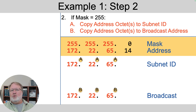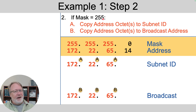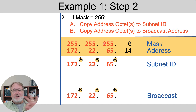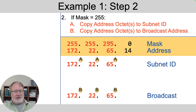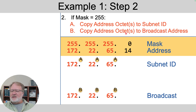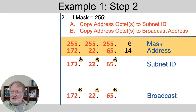Step two: we go octet by octet and key off the value in the mask. If the mask is 255, we copy the address octets to both the subnet ID and the broadcast address. Our mask is 255, 255, 255, 0 — so we have three octets that are 255. We copy 172, 22, 65 down to the subnet ID and again to the broadcast address. That simple.